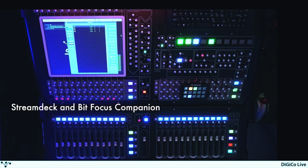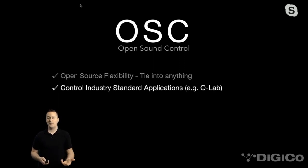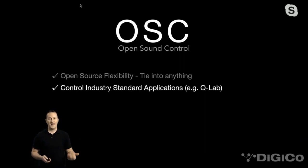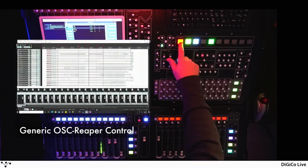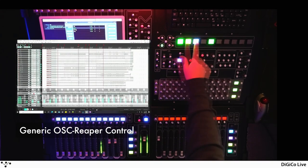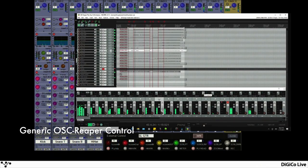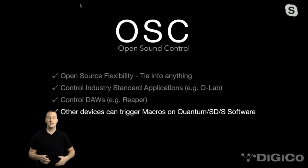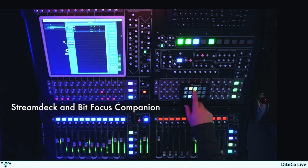What do you get with OSC? First, open-source flexibility — you can tie into anything. You can control industry-standard applications like QLab for theater, cruise ships, theme parks, or churches, and control it either way: QLab controlling Digico or Digico controlling QLab. You can control DAWs like Reaper — play, stop, rewind, locate, transport controls, even zoom controls. Reaper makes it easy to map OSC commands directly to existing commands. Other devices like BitCompanion or Stream Deck can trigger macros on the Quantum software, giving you more physical buttons to trigger commands, even snapshots.